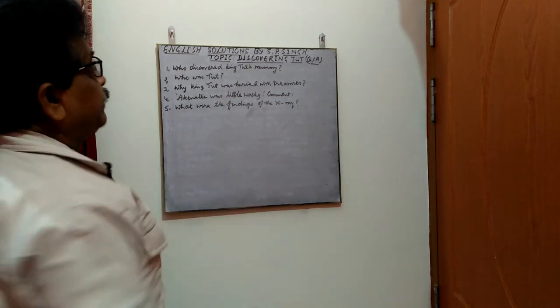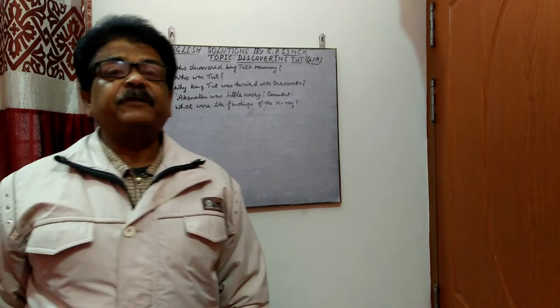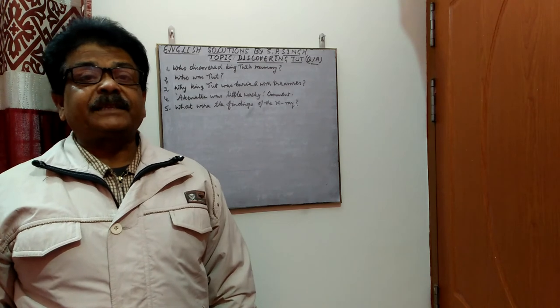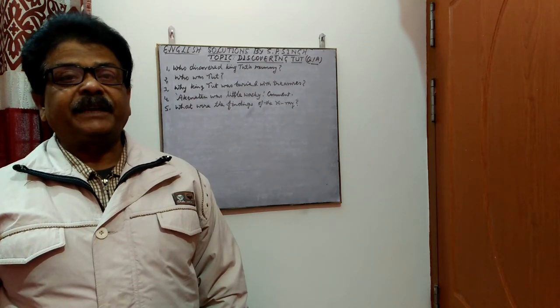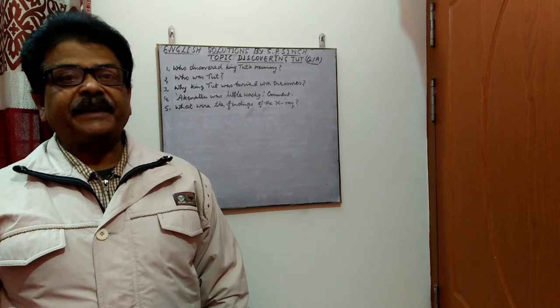Fourth question: Akhenaten was little eccentric. Akhenaten was an ancestor of the boy king Tutankhamun, and he was considered eccentric as he was a worshipper of the god Aten.